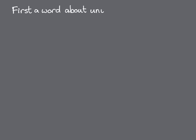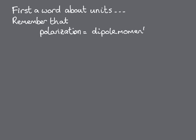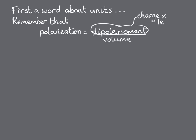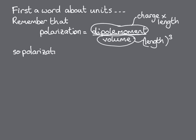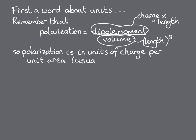But first, a quick reminder about units. Remember that the polarisation is the dipole moment per unit volume, and that the dipole moment has units of charge times length, and the volume has units of length cubed. So the units of polarisation are charge per length squared, or charge per unit area.